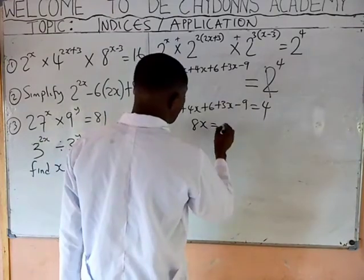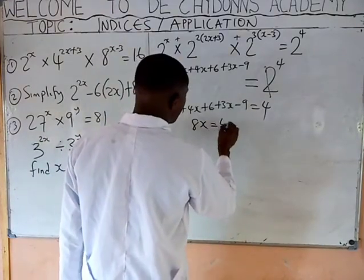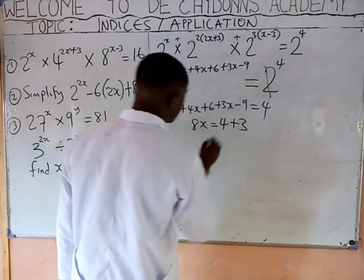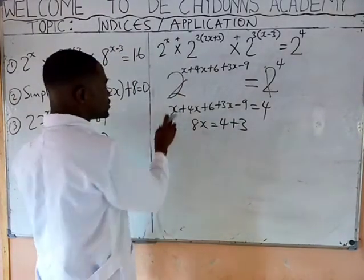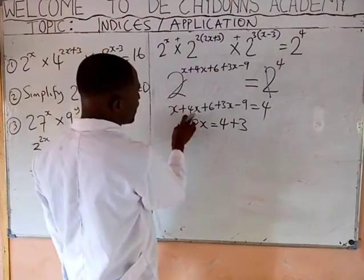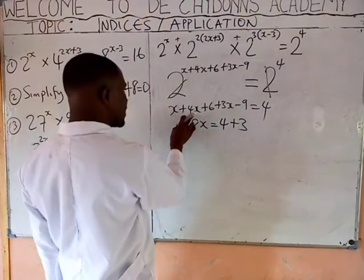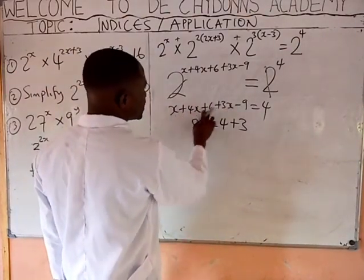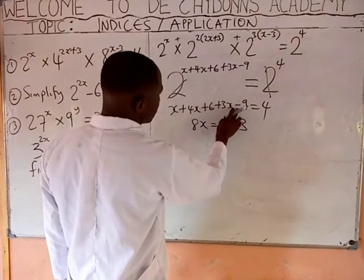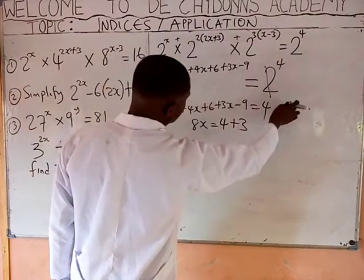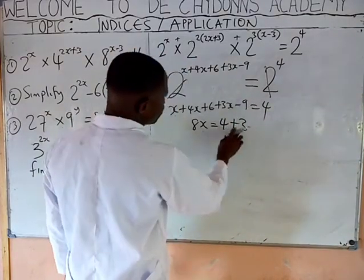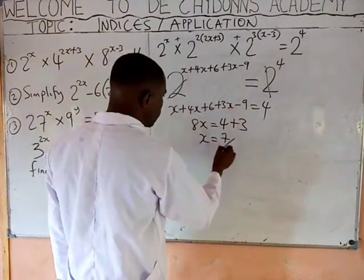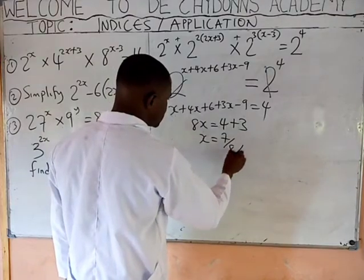Minus 3 goes to the other side, giving us 4 plus 3. So X plus 4X is 5X, plus 3X is 8X, and 6 minus 9 is minus 3. Taking it to the other side turns to plus 3. Therefore X equals 7 over 8.